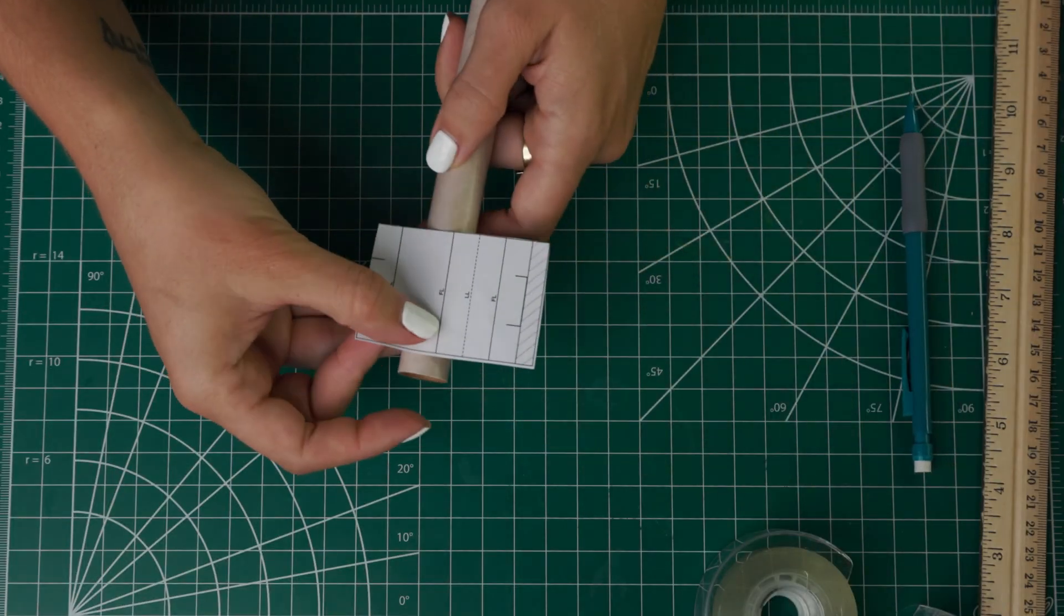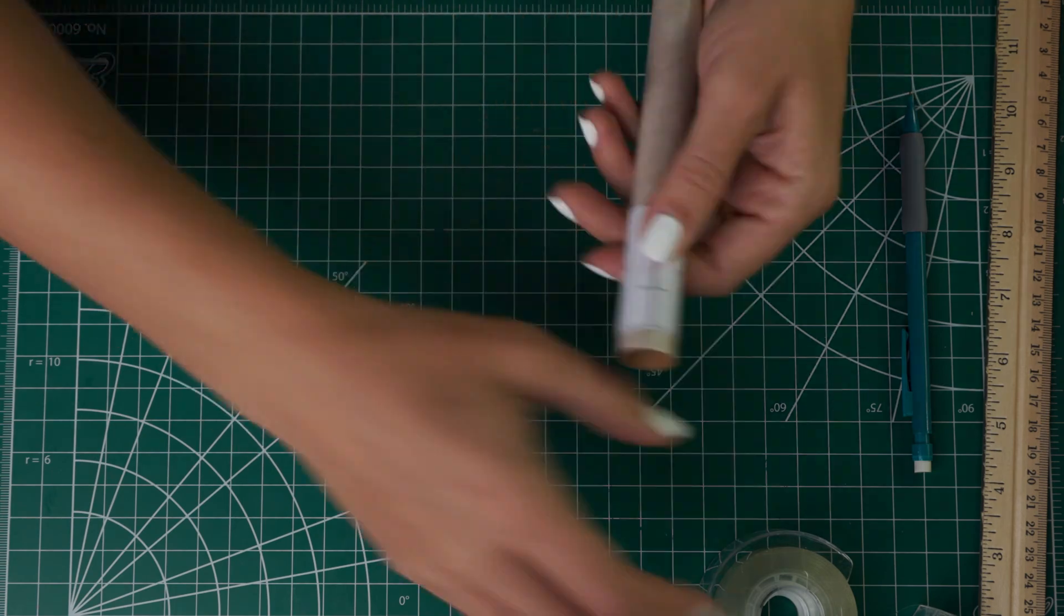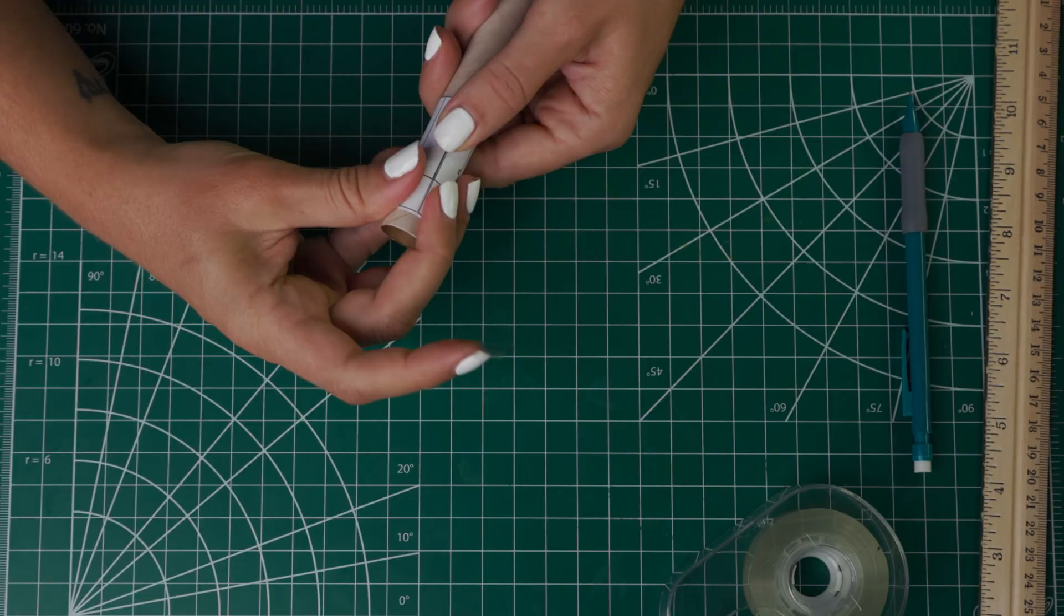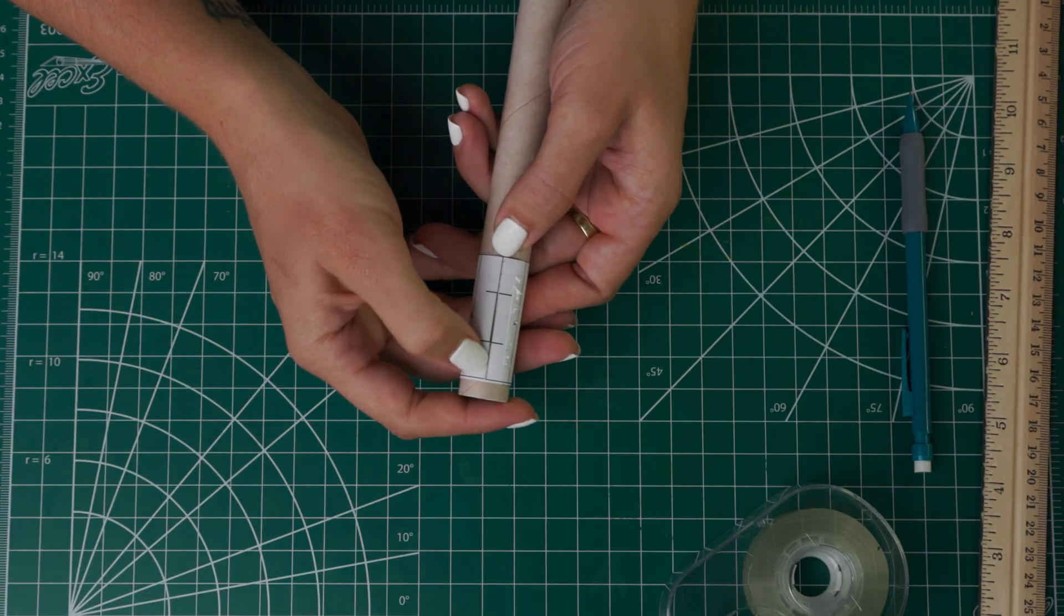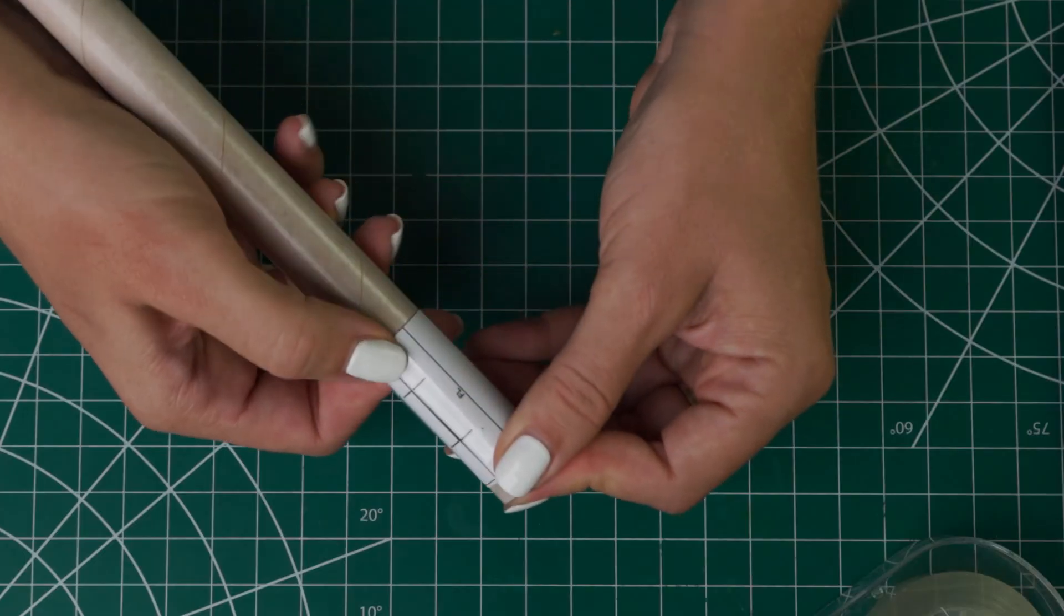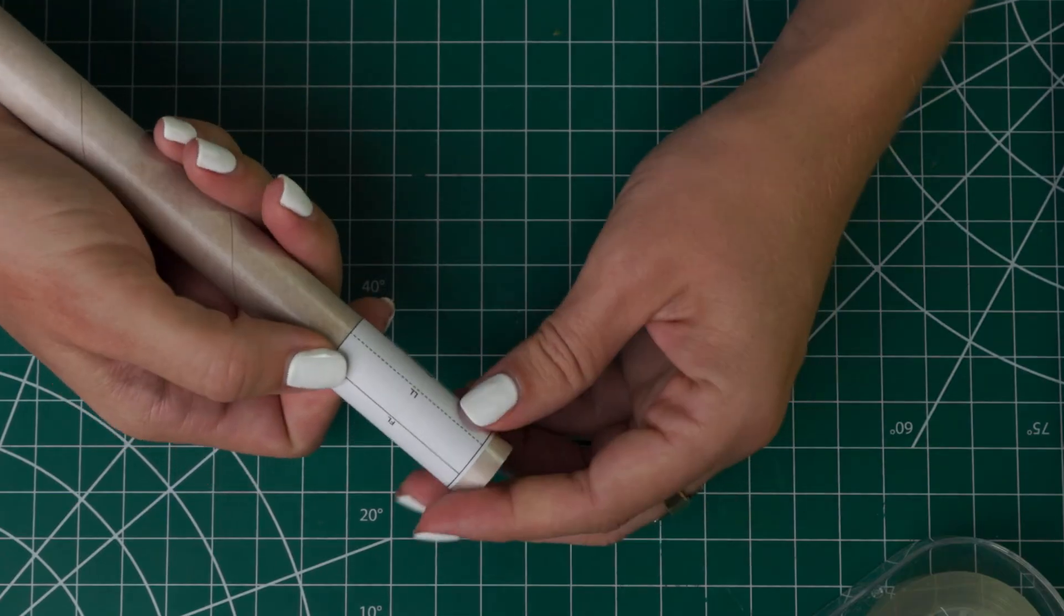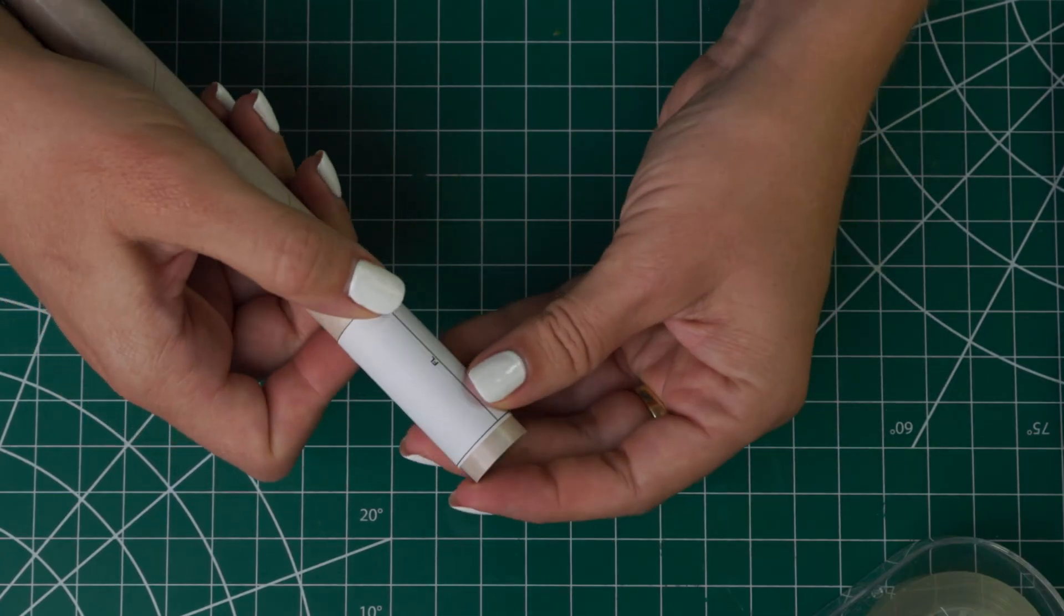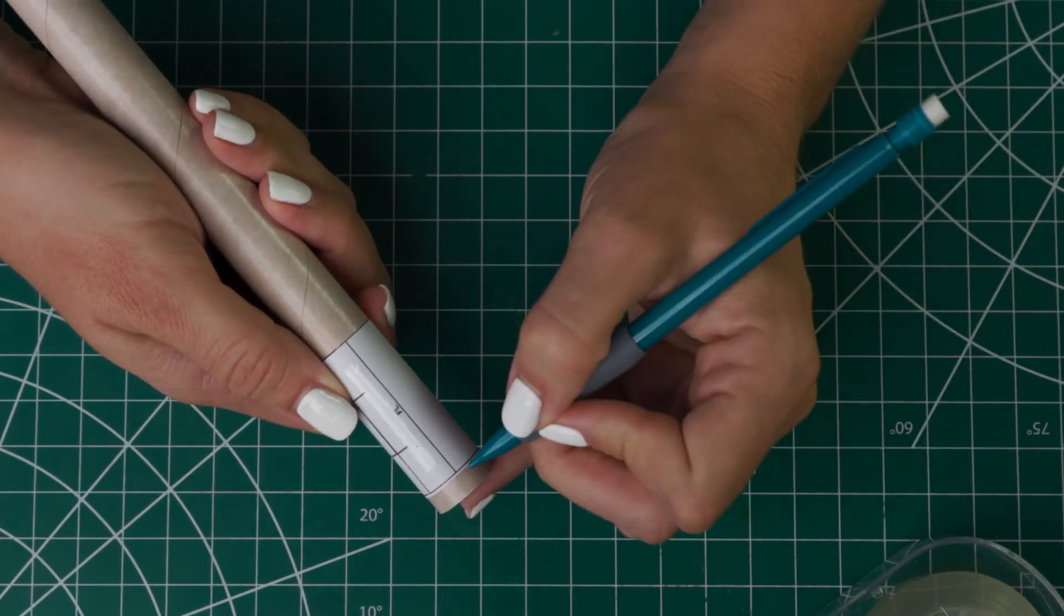Now we're going to tape this around the bottom of the body tube. When you tape that you want to make sure that it's really lined up evenly so that you're making your marks evenly. Then you can see these lines are labeled FL and LL. This is for fin line and then launch lug. Make sure you make some marks on both ends of the guide for each line.